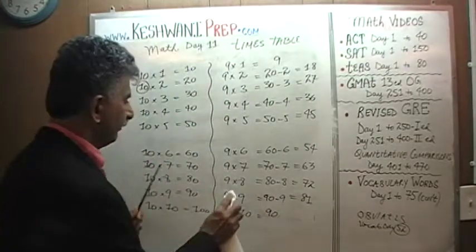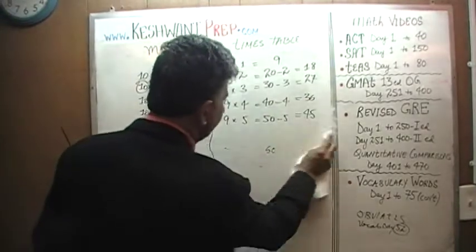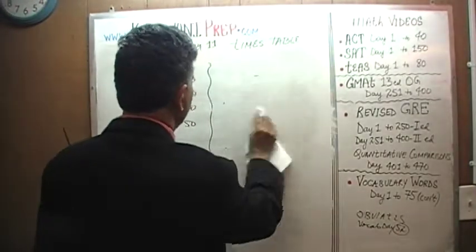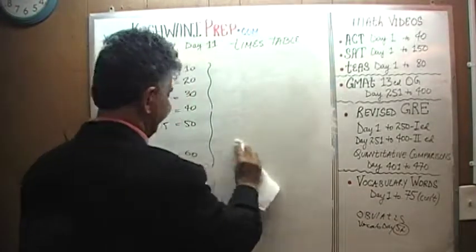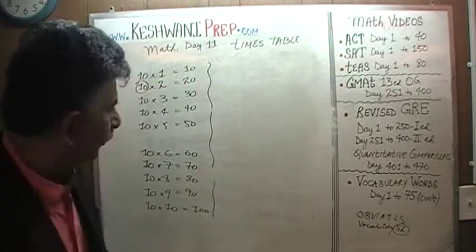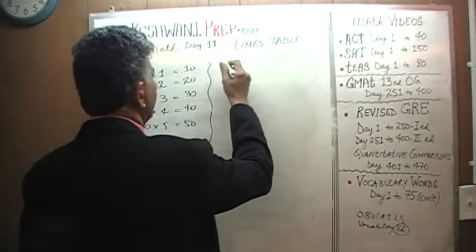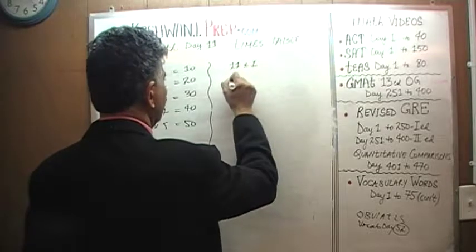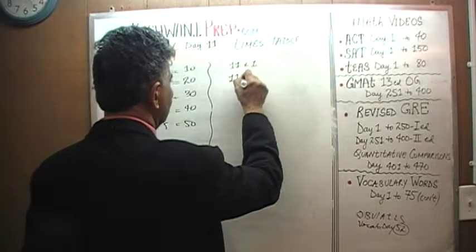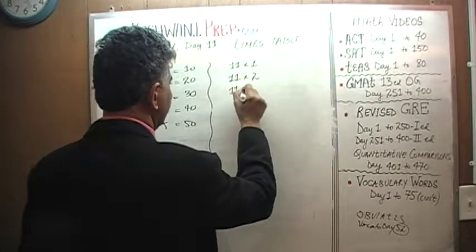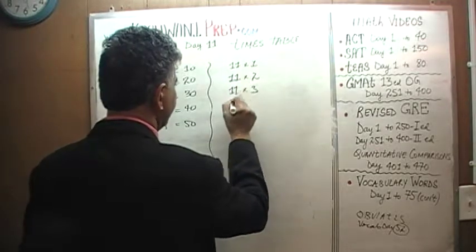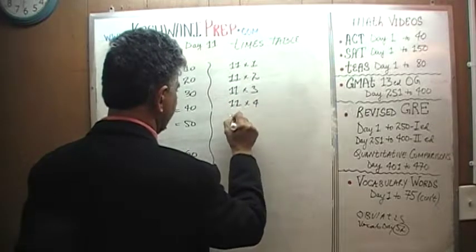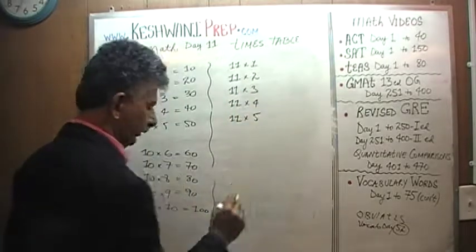For example, let's look at the table of 11. So we have: 11 ones are, 11 twos are, 11 threes are, 11 fours are, and 11 fives are.